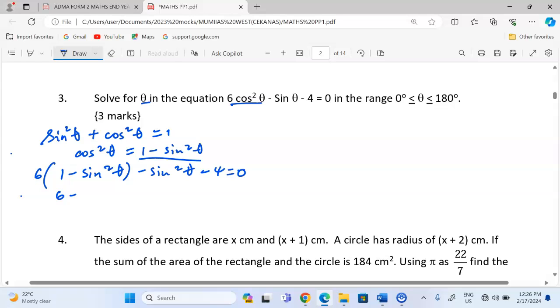Then we can have 6 - 6sin²θ - sinθ. Sorry, this is supposed to be sinθ, not even squared. Let me clear it. That should be sinθ. So now we're going to have - sinθ - 4 = 0.